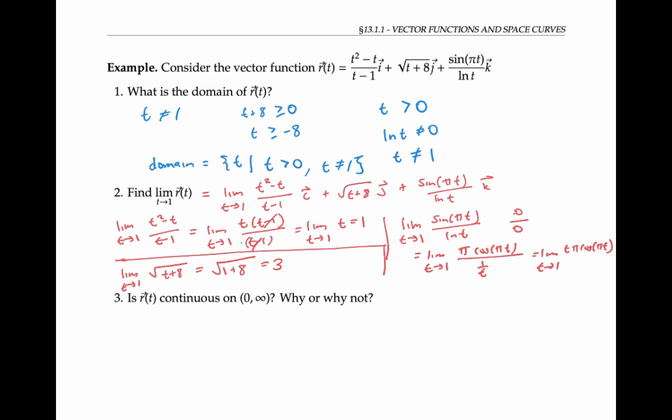And now I'm in a position where I can just plug in one for t, and get one times pi times negative one, or negative pi. Having evaluated the limits of all my components, I can now plug in and get a limit of one i plus three j minus pi k.